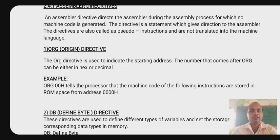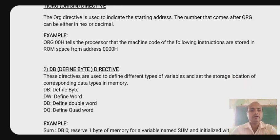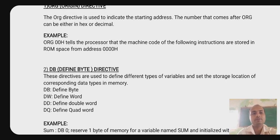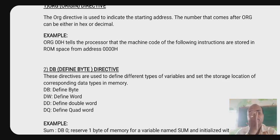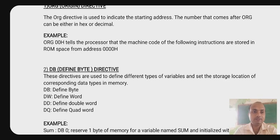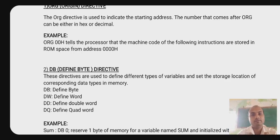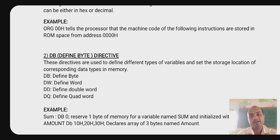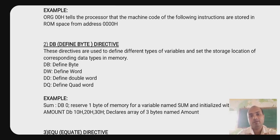Define Byte (DB) is used to define different types of variables and set the storage location of the corresponding data type in memory. DB is Define Byte, DW is Define Word, and there is also Define Double Word.